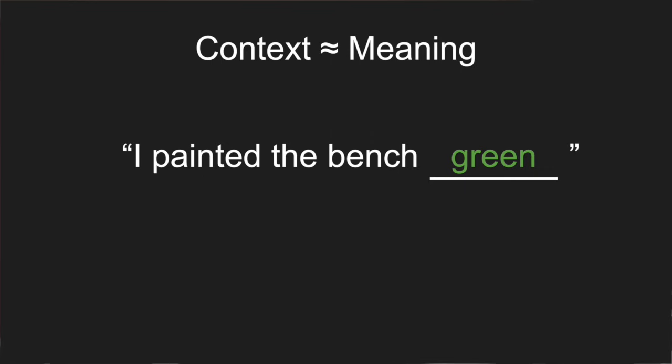Already we can see that if a word can show up in this context, it's likely to be a color. But that's not always true—you could also say 'I painted the bench today,' and today is not a color. The main takeaway is that context is really closely related to meaning. So that was an example where multiple different words could go into the same context, and we presume that those words are somehow related—at least a lot of them are.